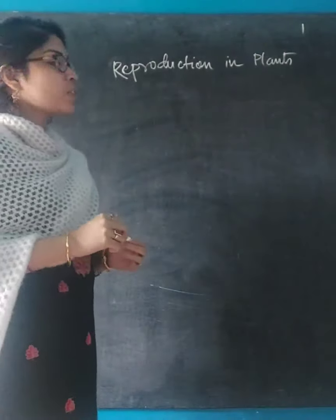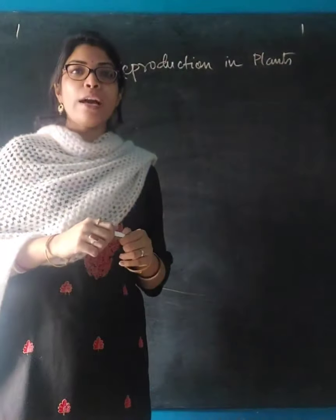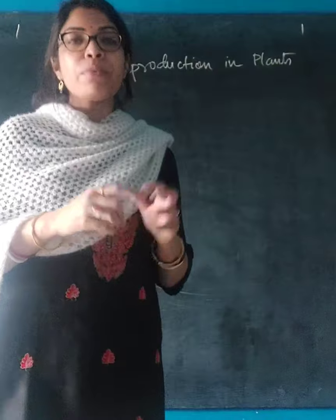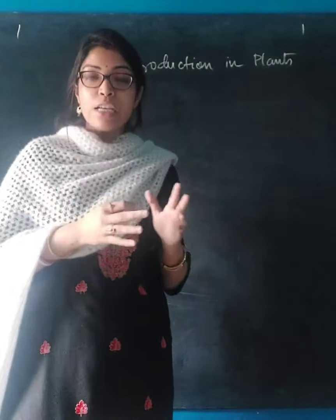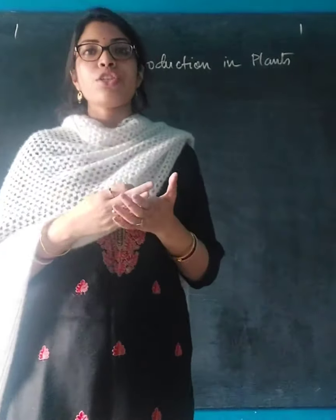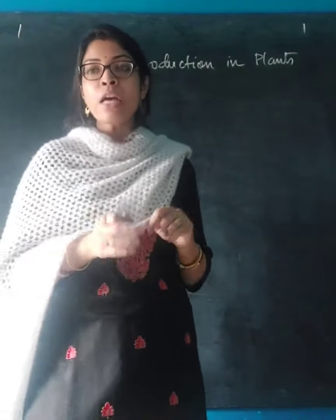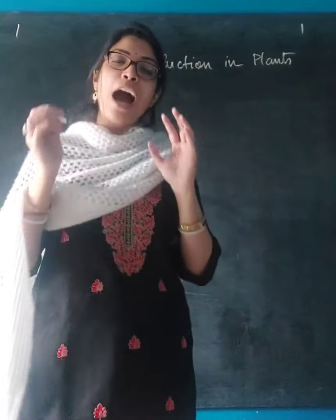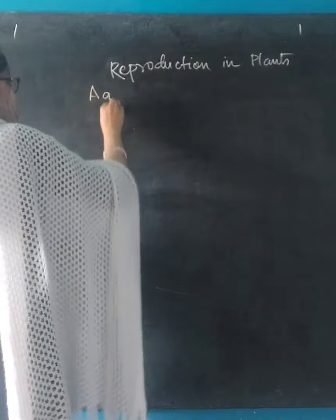Today I will be continuing with the chapter reproduction in plants. In my previous video I discussed the topic of pollination — what pollination is, the types of pollination: self pollination and cross pollination, and the difference between them. Now I will continue with the next part, which is under pollination only, which is agents of pollination.